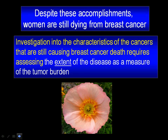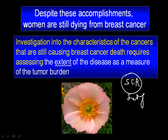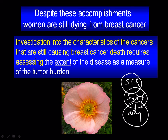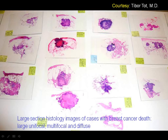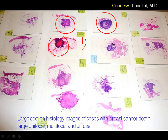Despite the fact we are screening, and surgery has developed a lot during the past two decades, with adjuvant chemotherapy and radiation therapy, patients are still dying from breast cancer. There are three reasons: when the unifocal carcinoma is too large it can spread and be fatal; the other is called multifocal breast cancer; and the third is diffuse breast cancer.